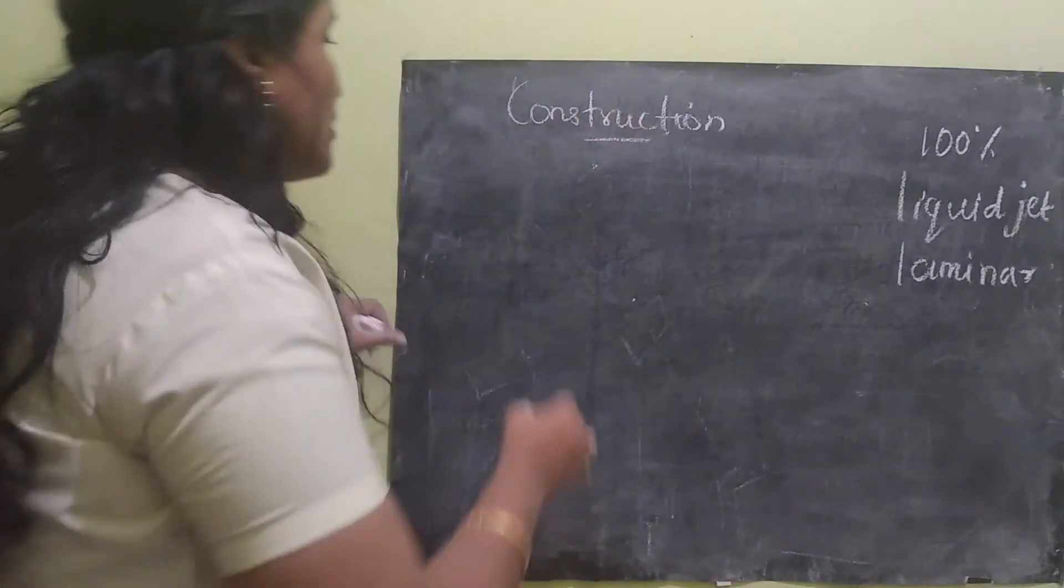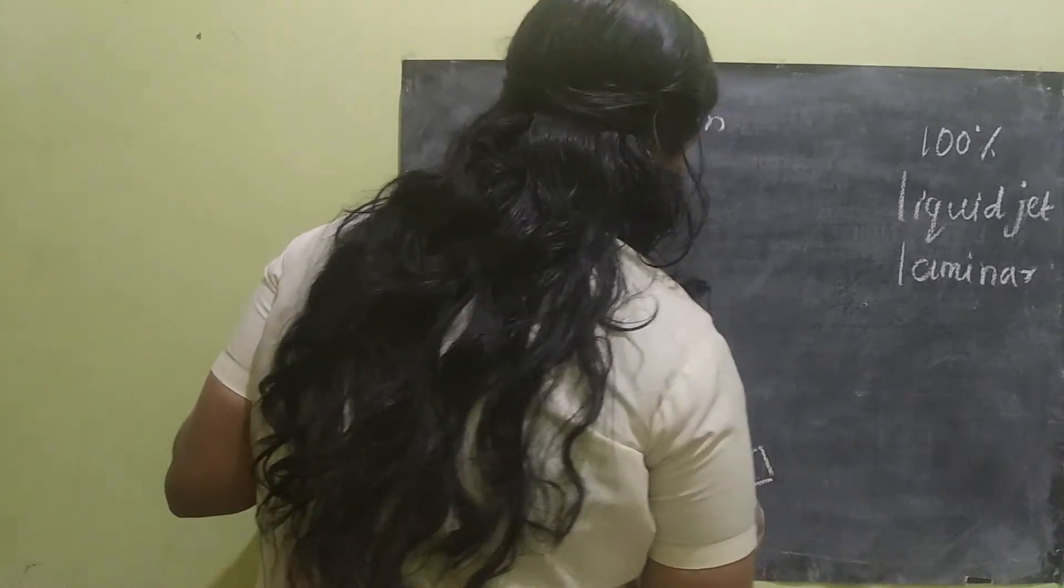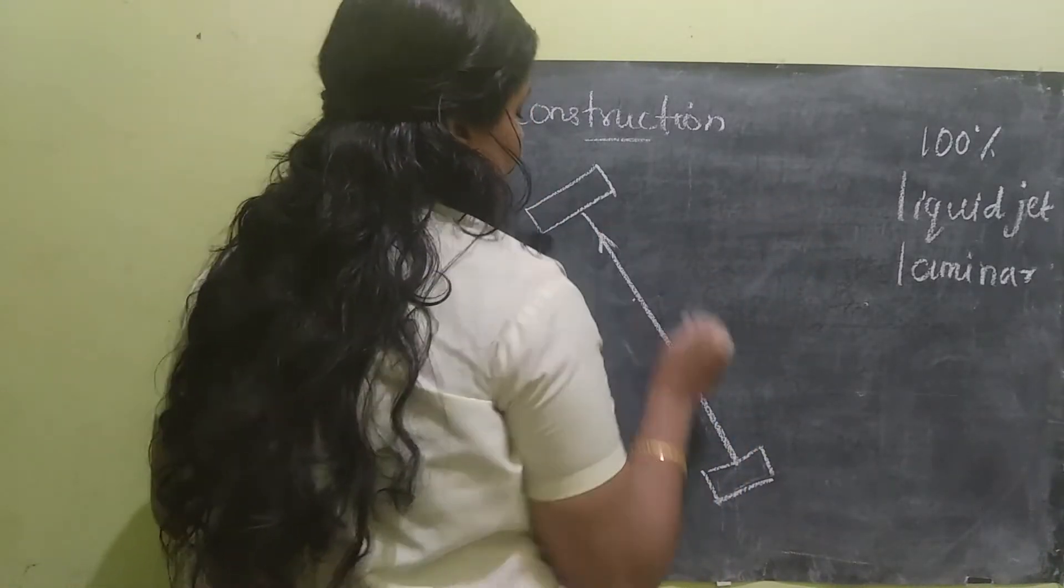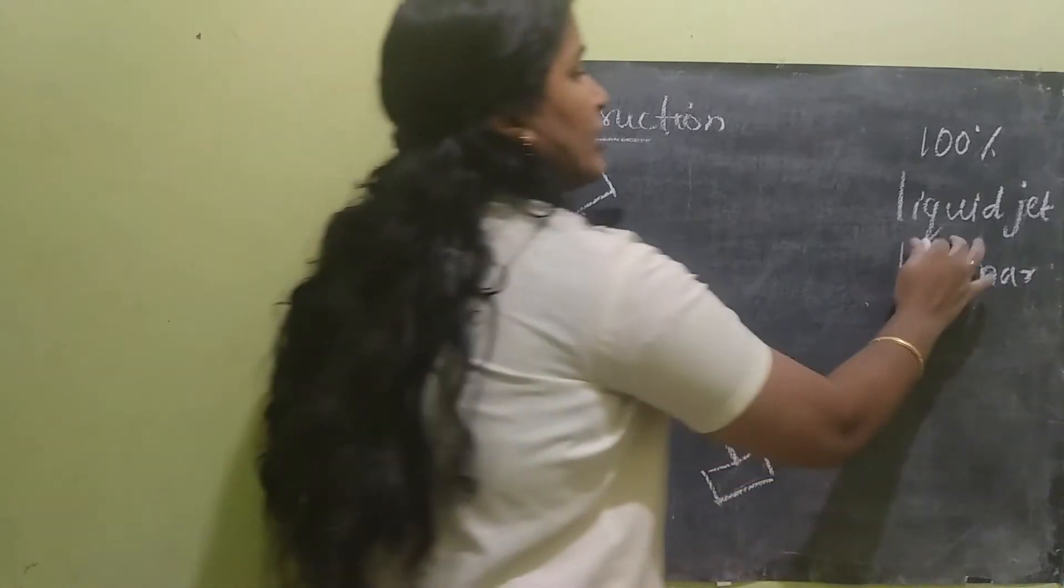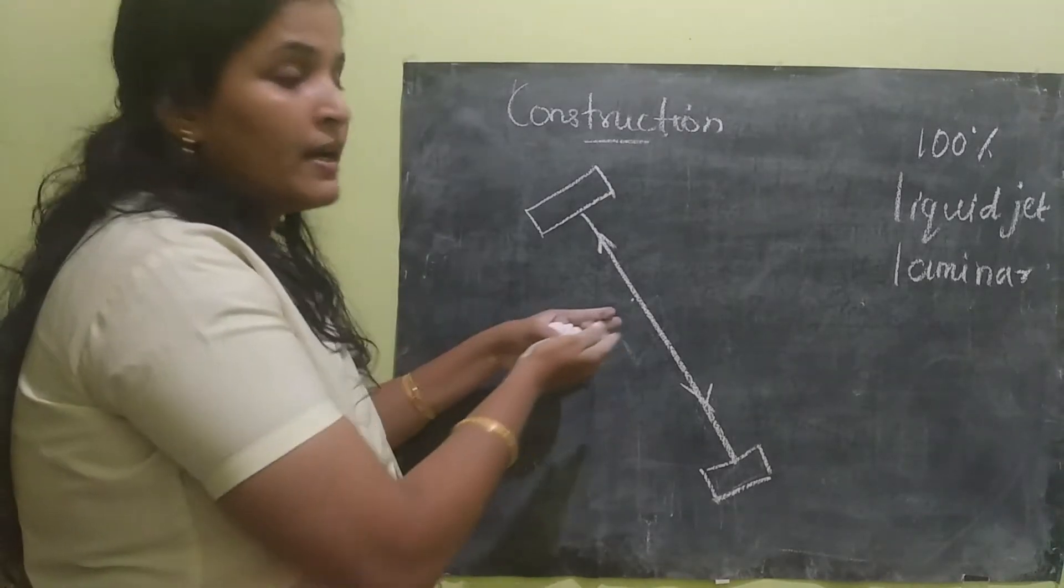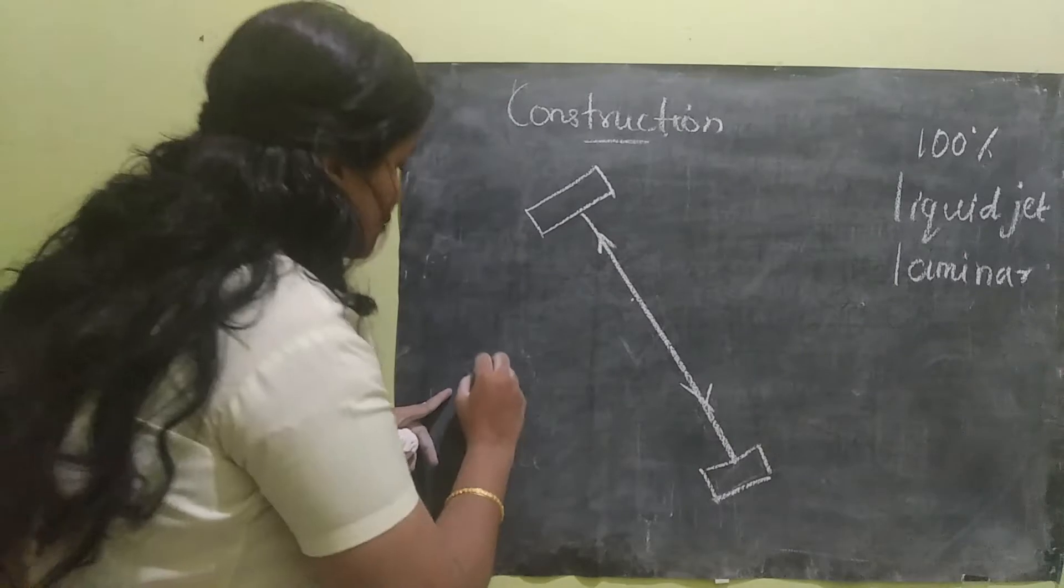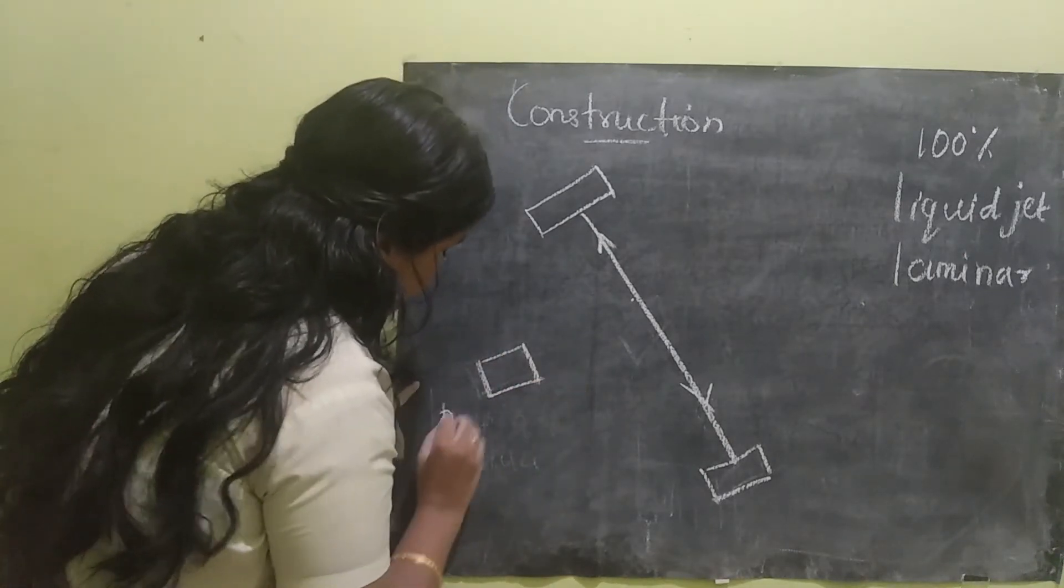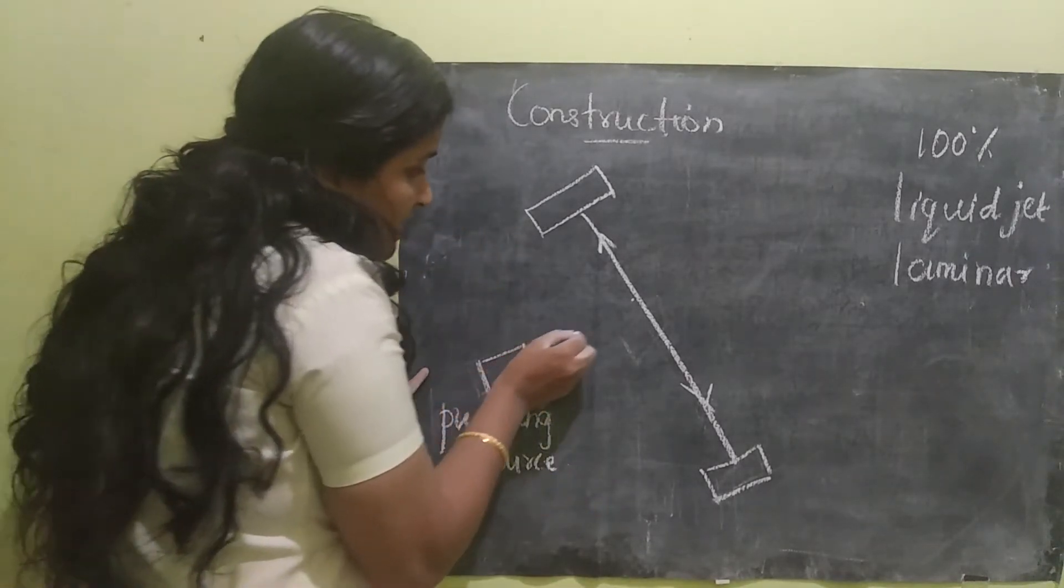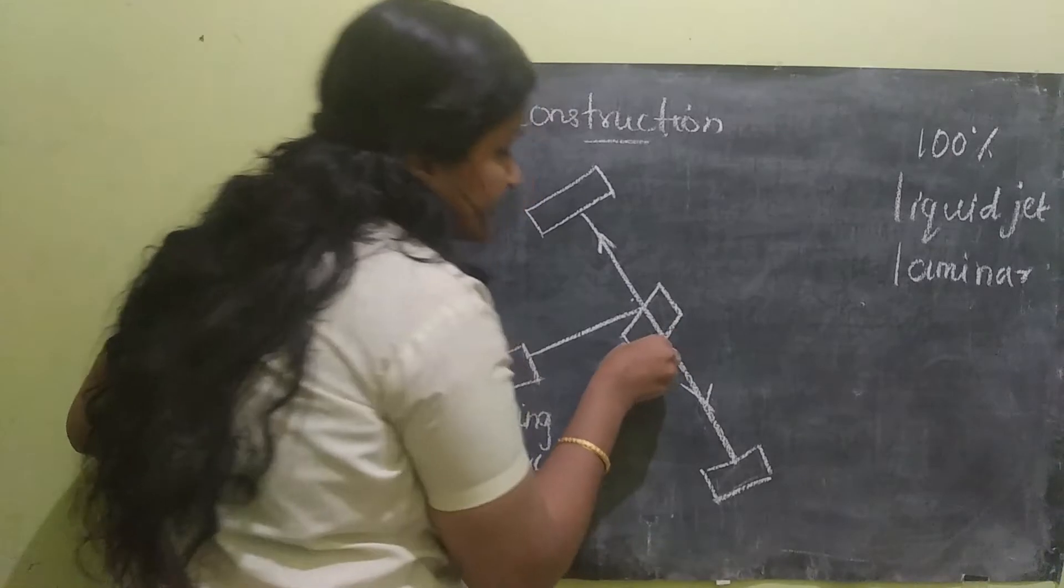Let us draw the diagram. Here, as I said, we have two reflecting mirrors. The dye will be flowing by using the liquid jet. Now, as I already said, the pumping source should be given perpendicular to this dye stream. Here we will be having a collecting device which is called the Brewster Angle Window.